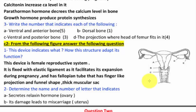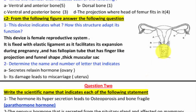The labels on the diagram: A secretes relaxing hormones, so it is the ovary — the ovary carries ova. B is the uterus. C is the vagina, which is a thin tube.